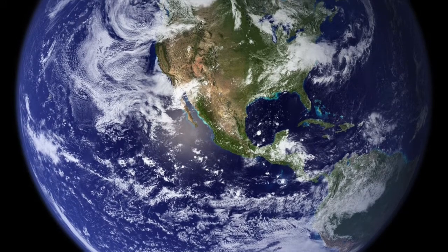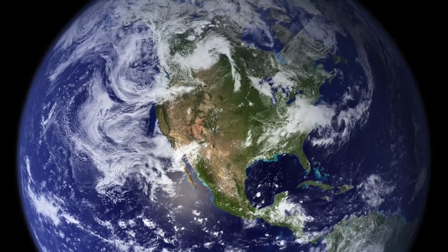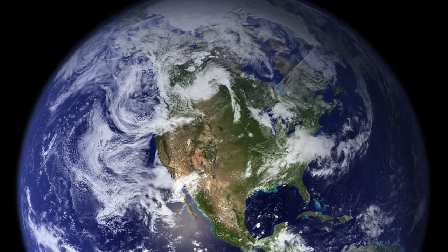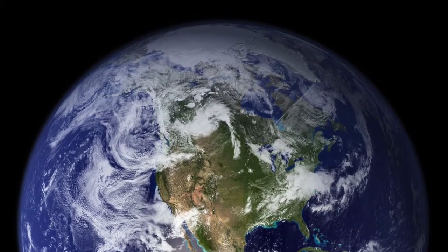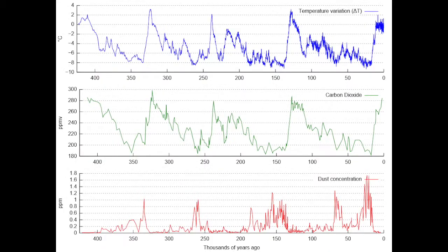Increasing global temperatures is not the only aspect of climate change. Known as the other CO2 problem, ocean acidification is going to become a larger problem for ocean life if action is not taken now. Ocean acidification is the change in the acidity of the ocean, brought on by lowered pH levels as a result of increased levels of carbon dioxide in the atmosphere. The levels of carbon dioxide present in the atmosphere are currently at about 387 parts per million, which is 30% higher than the average levels over the past 650,000 years.